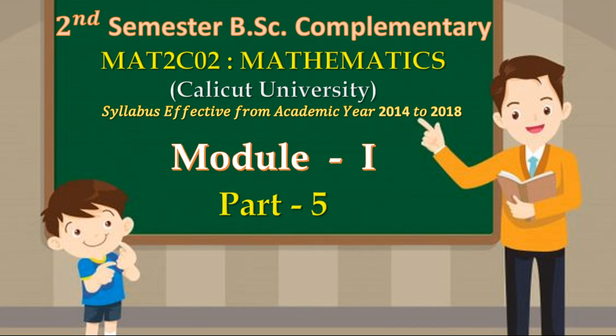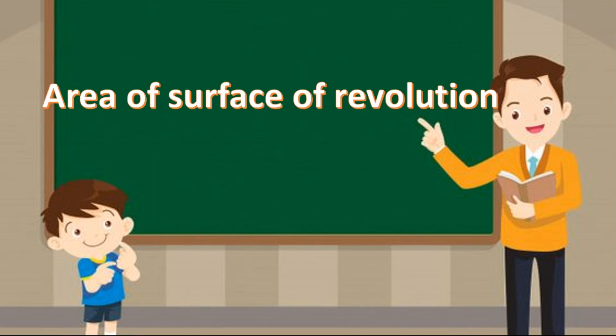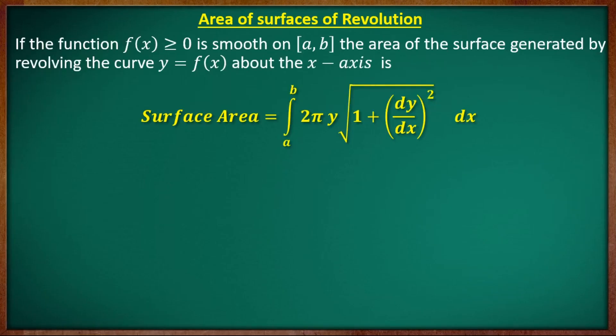Part 5 will discuss another topic: area of surface of revolution. Definition: if the function f(x) > 0 is smooth, the area of the surface generated by revolving the curve y = f(x) about the x-axis is: surface area = integral from a to b of 2π y · √(1 + (dy/dx)²) dx.